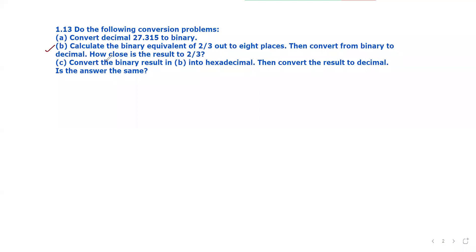Next, second part: calculate the binary equivalent of 2/3 up to 8 places. Then convert from binary to decimal. How close is the result to 2/3? First, we find the binary equivalent of 2/3 up to 8 places.